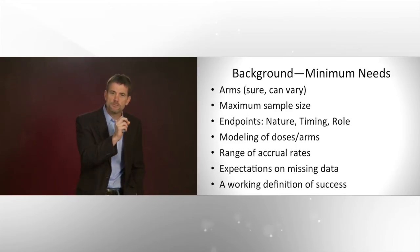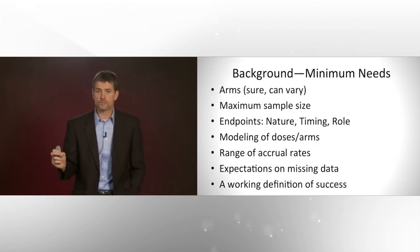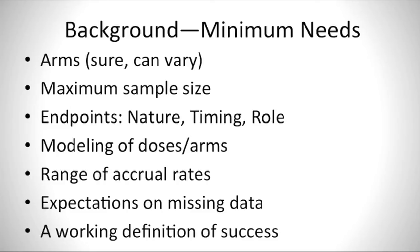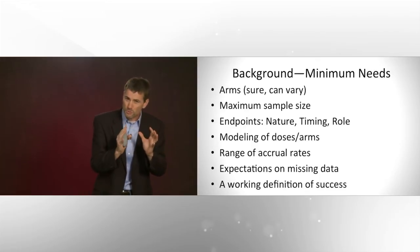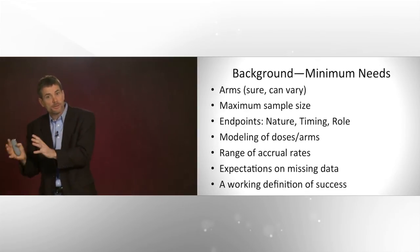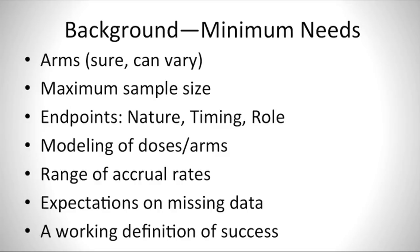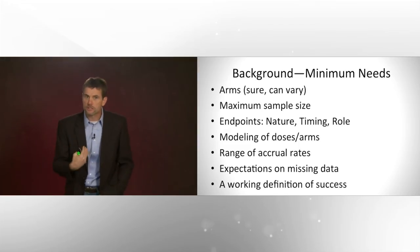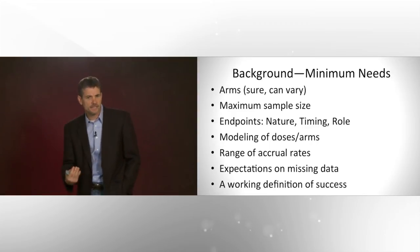At the end of the day you need to know the arms, the maximum sample size, what are the endpoints, do we model the arms and the doses, what are the accrual rates? That's a new thing for statisticians as well. Adaptive designs critically need accrual rate. They depend on the time to information so accrual rate becomes a really important part of that and what adaptations might even be available to you as a designer. What about missing data? How much do we expect? When does it become missing? And you've got to create a working definition of success. Is it that we would go to phase three? Is it statistical significance? Is it 50% probability this works? You need to create what that definition of success is. Finding the right dose.